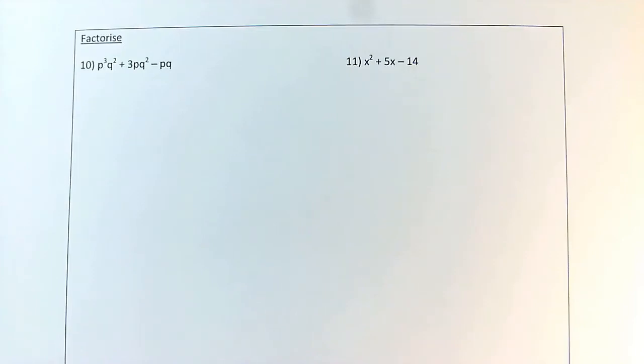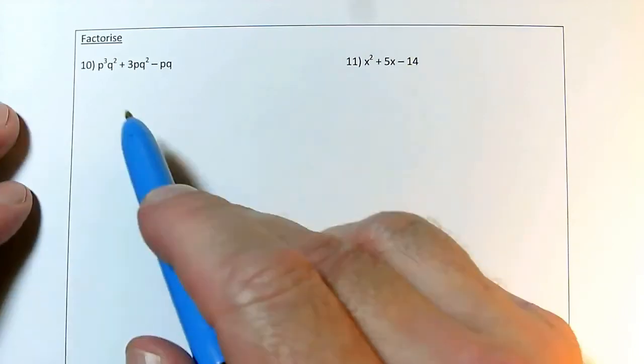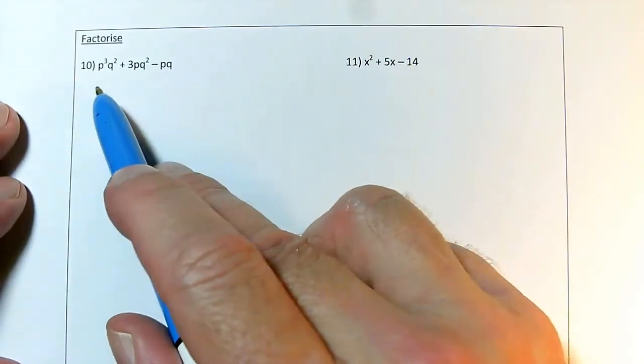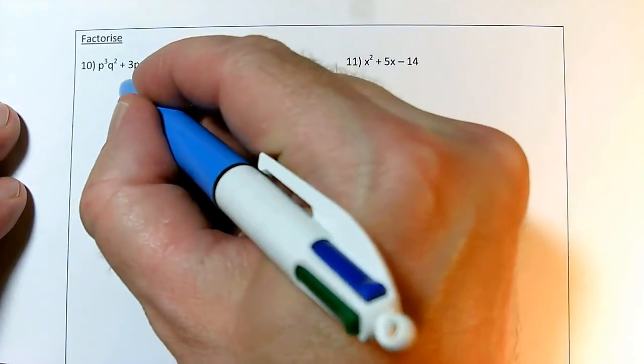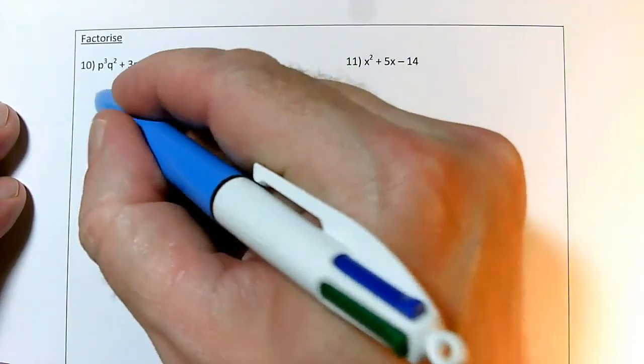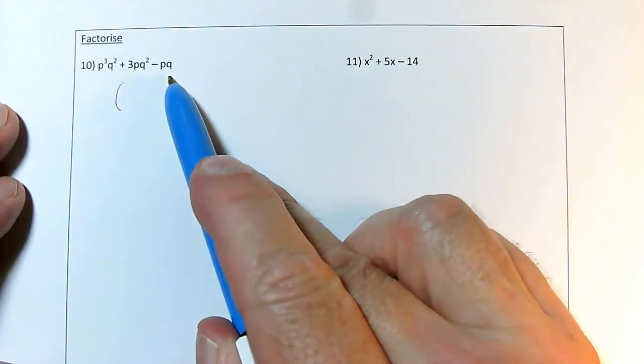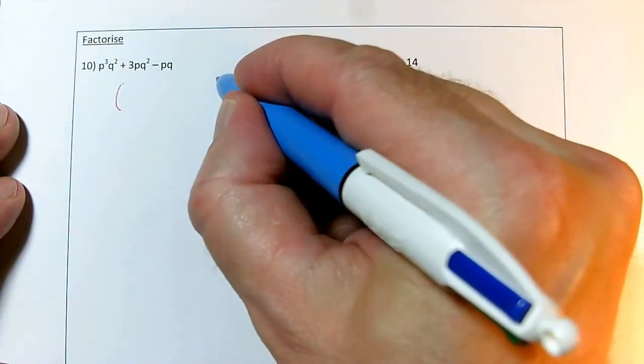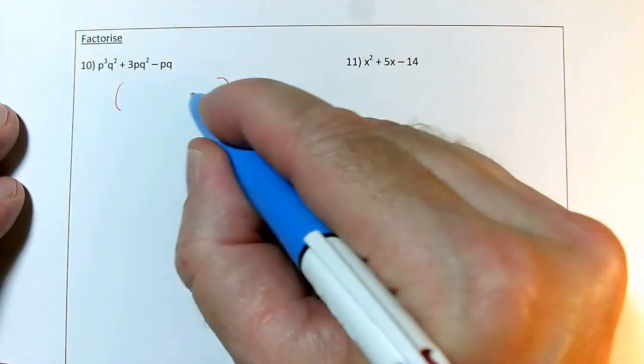In questions 10 and 11 we're doing factorizing, and we've got two different kinds of factorizing. This one is just going to need one set of brackets because I'm going to spot a common factor, something that all of these things can be divided by, and I'm going to put the common factor outside the bracket and then fill in the bracket.